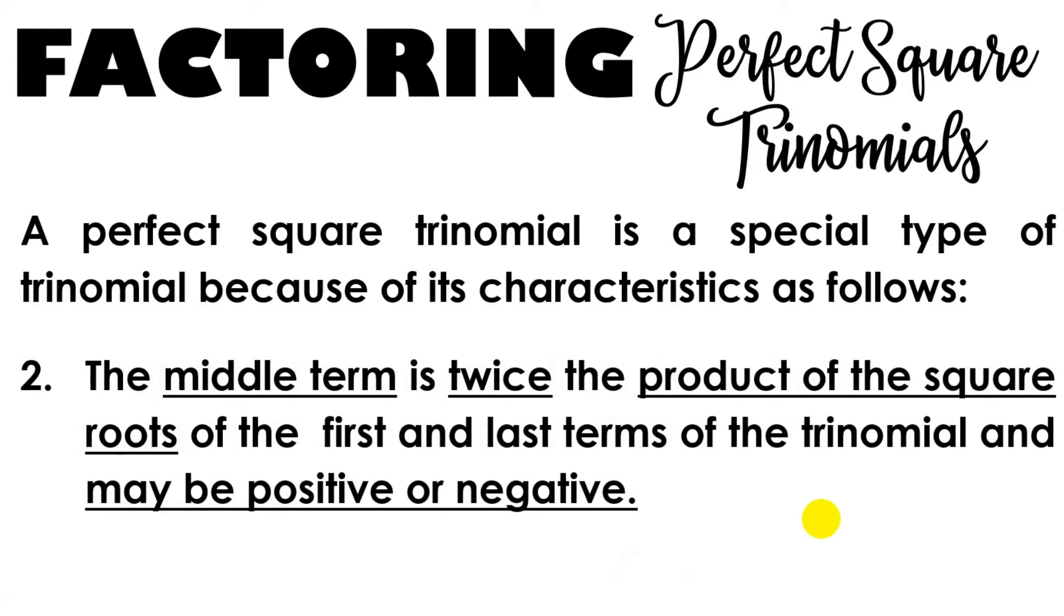Another characteristic of a PST is that the middle term is twice the product of the square roots of the first and last terms of the trinomial and may be positive or negative. In the first characteristic, the first and last term are always positive, but here for the middle term, it can be positive or negative. And we must remember this part, that the middle term is twice the product of the square roots of the first and last term. When we multiply the square root of the first and last term and multiply it by 2, it should equal the middle term of our trinomial.